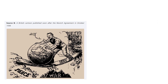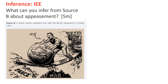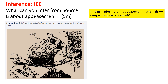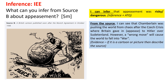I am going to use this source, which I think we have gone through in great detail, but I'm going to show you how to answer an inference question using it. An inference question looks like: 'What can you infer from Source B about appeasement?' It is an IEE type of question. How do you answer such a question? You always start with inference and answering the question — that means 'I can infer that appeasement was...' based on the source. It was risky, it was dangerous. Moving on after you have made the inference and answered the question, what you need is definitely the source details, or the evidence — that's what the second E stands for.